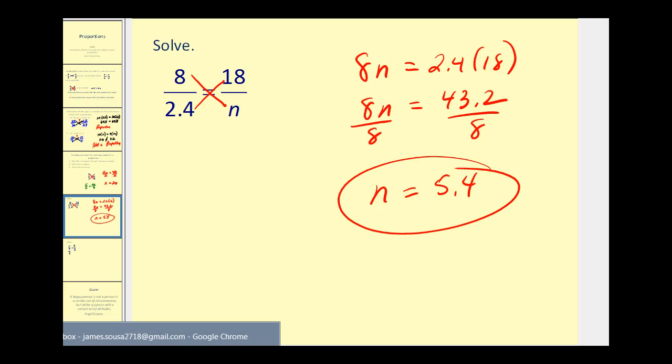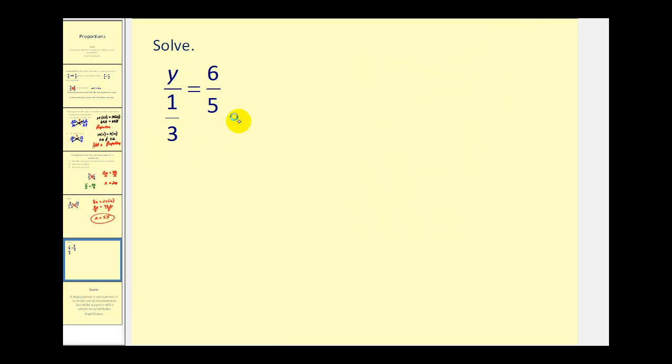Let's go ahead and take a look at one more. This one looks a little more confusing because the denominator of this first fraction is a fraction in itself. So it's going to be helpful if we rewrite this to make it look a little nicer, meaning we have y over one-third must equal 6 over 5.